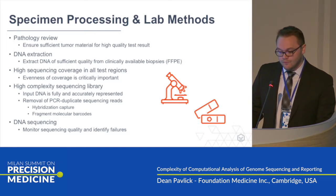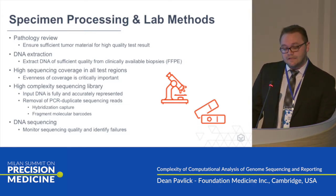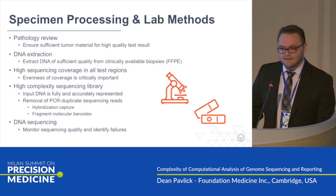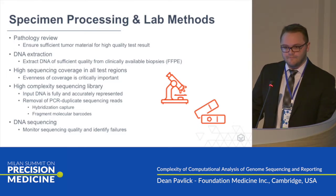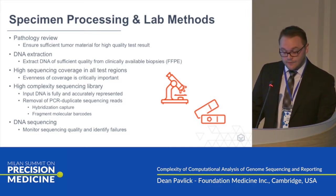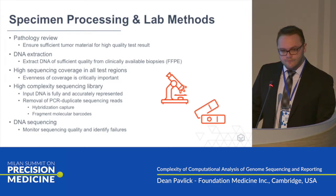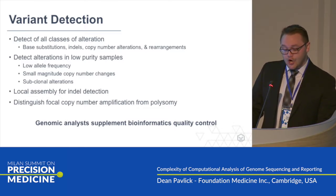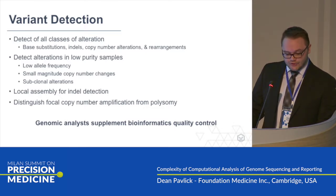Additionally, we need to be able to remove all sequencing reads that are a result of PCR duplication of the initial input DNA. Achieving, say, 1,000x sequence coverage is impressive, but it's not really useful if all of those sequencing reads are derived from just a few input DNA molecules. The hybridization capture and molecular barcoding techniques that we employ really help achieve this high uniform coverage and also help filter all those PCR duplicate reads.